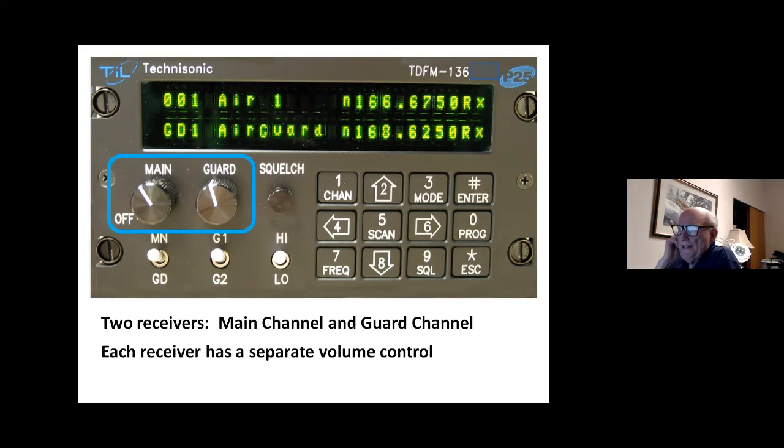We talked about the fact that the Technasonic has two receivers, the main channel and the guard channel. The main channel has 230 different programmable channels. We have 228 programmed in Utah Wing. And the guard channel, as you now know, has two channels. Each receiver has a separate volume control, so you can adjust the levels separately.